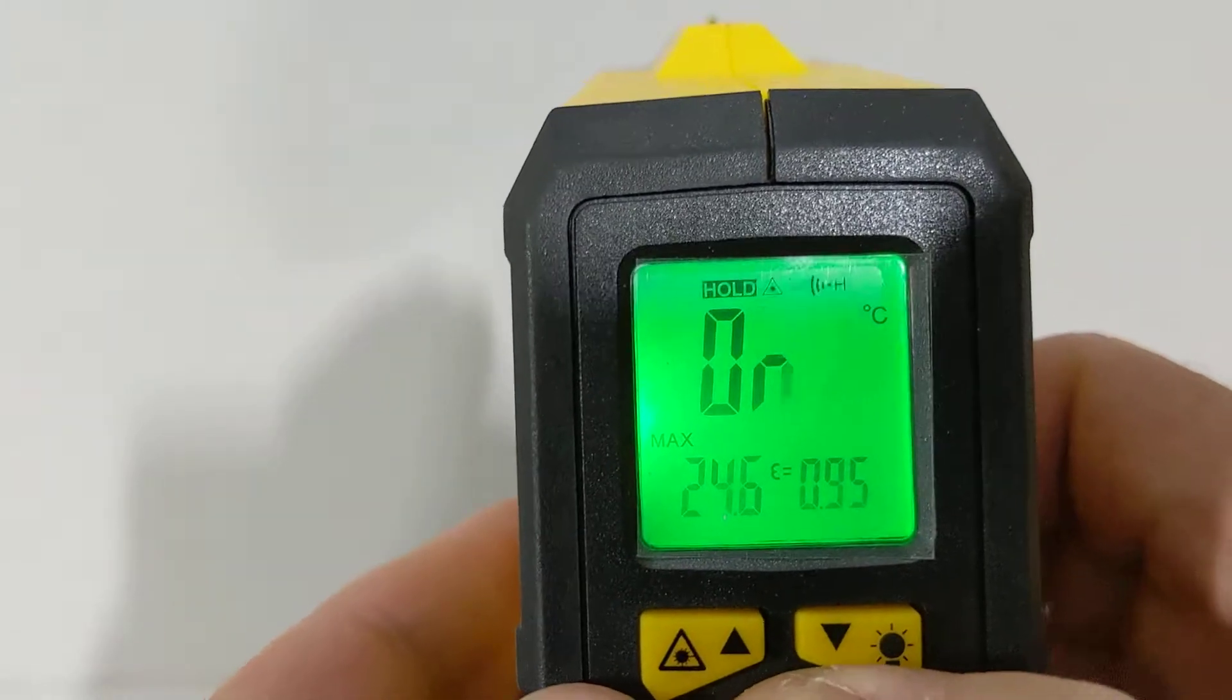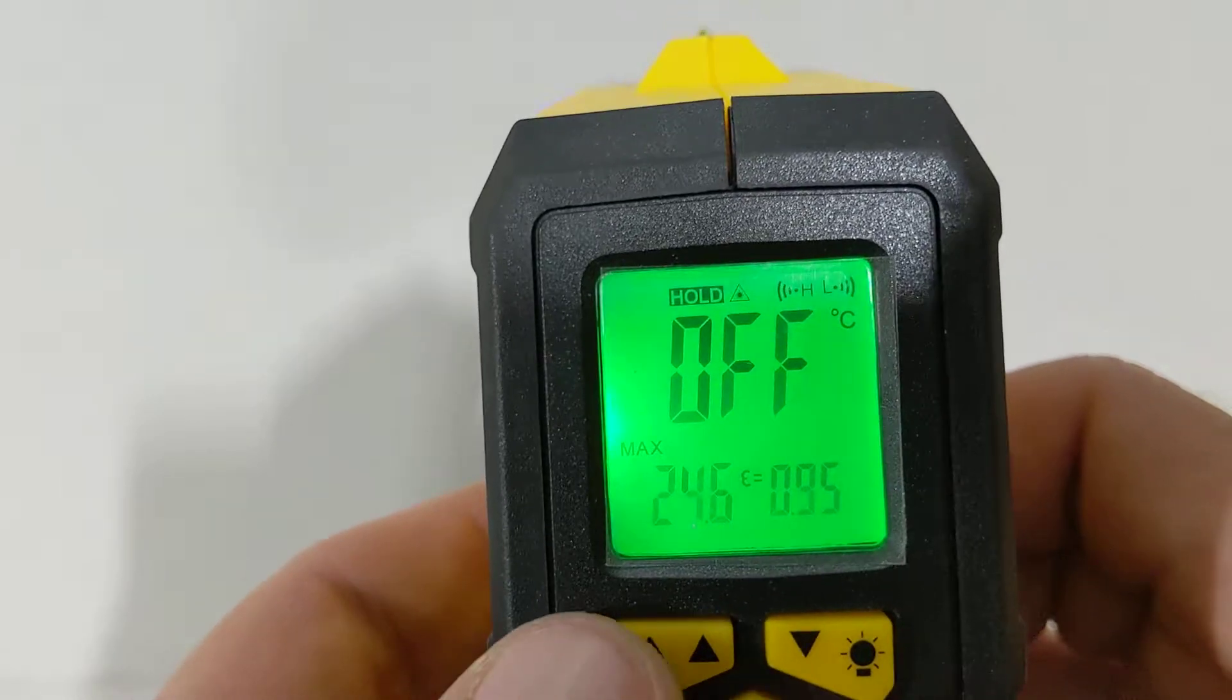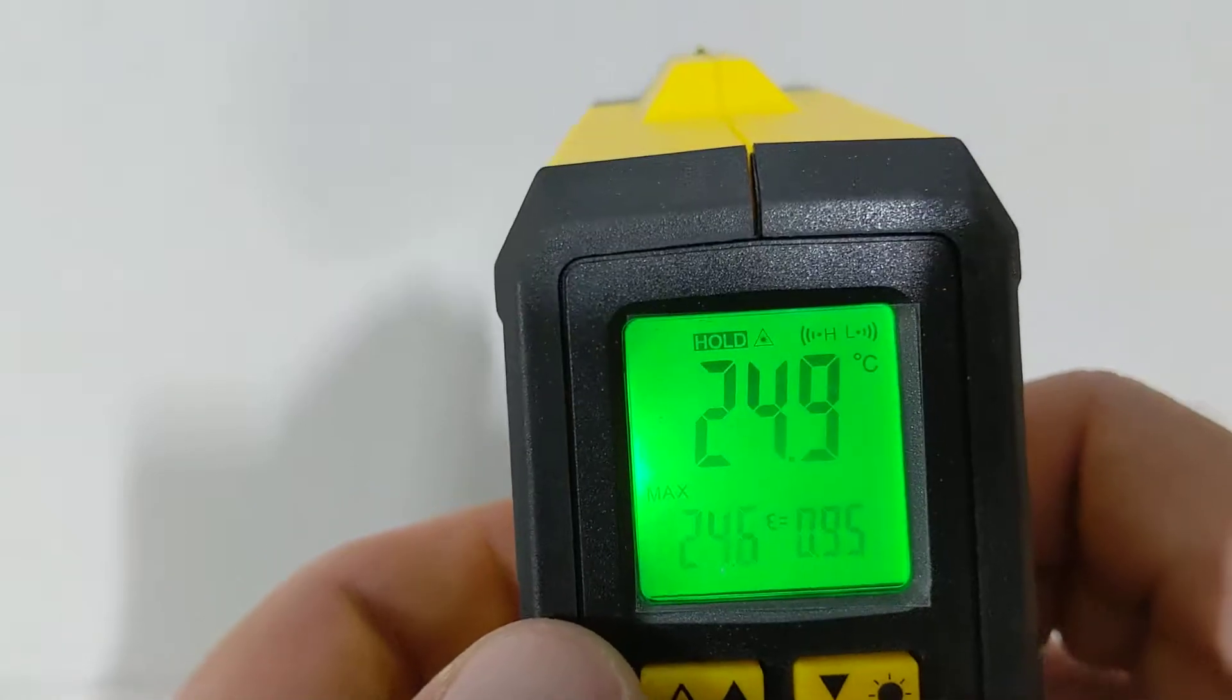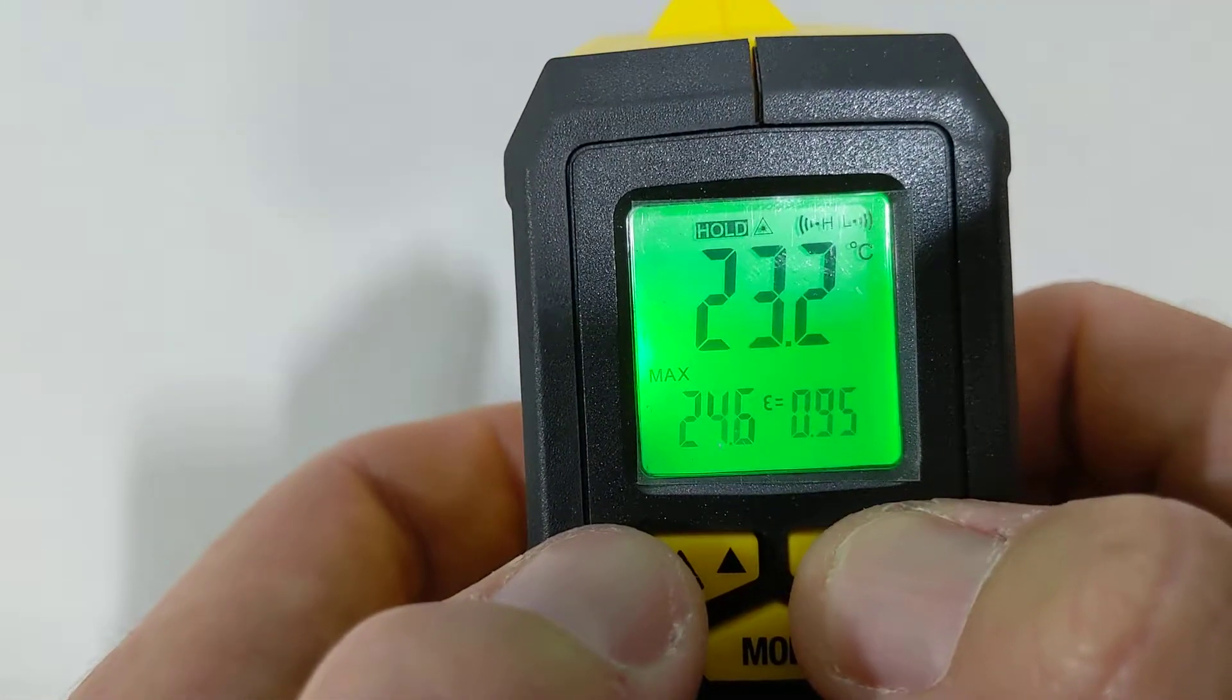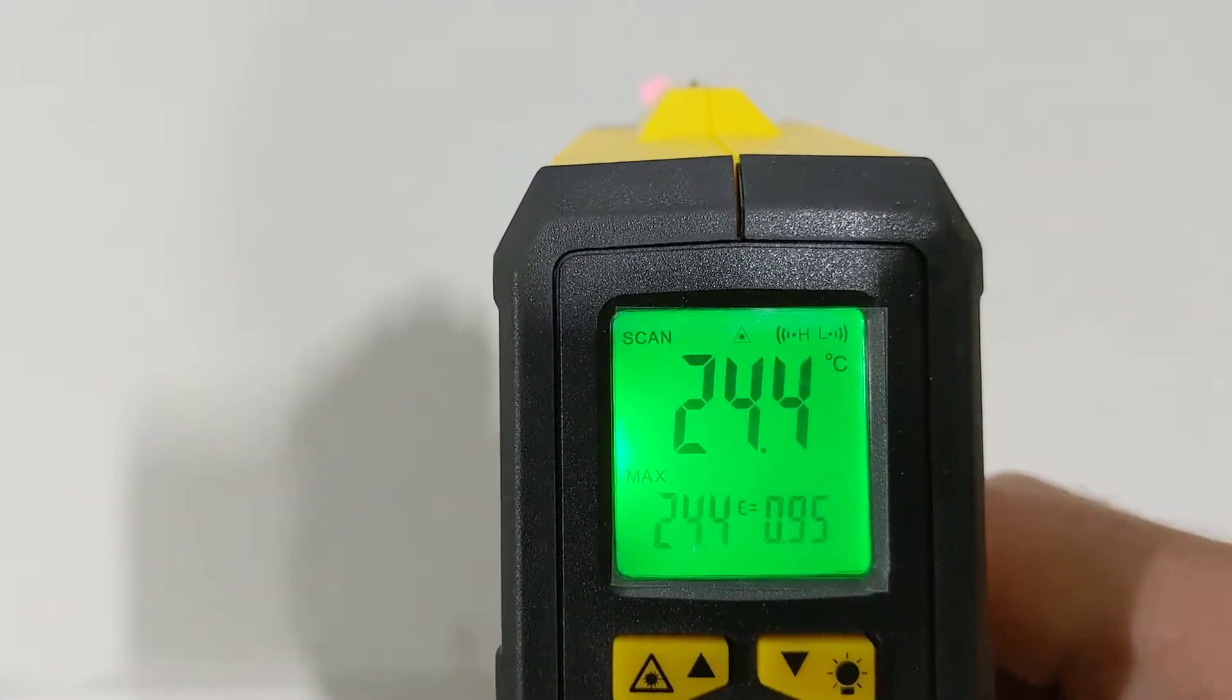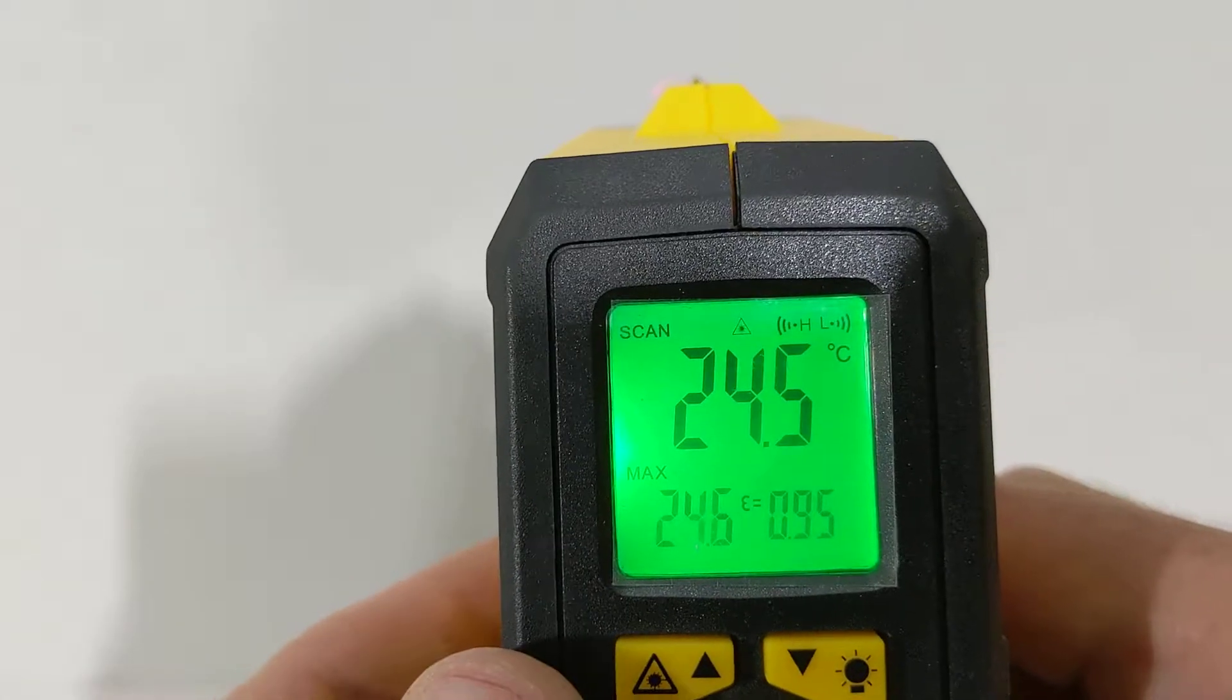So we go back in. And then what we'll do is we'll set our low. Now let's set our low on, we'll go down to 22. We know it's not going to get down that low. Because we're at 24, 25.